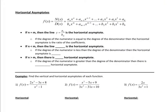Now let's move on to what we call horizontal asymptotes and how to find them. This is some rational function f of x, with a polynomial as the numerator and a polynomial as the denominator — this is the general form of all polynomials. There are three conditions when finding a horizontal asymptote. If n is equal to m — meaning if the degree of the numerator is equal to the degree of the denominator — then the horizontal asymptote is the ratio of the leading coefficients, a sub n over b sub n.